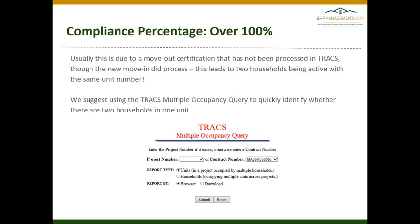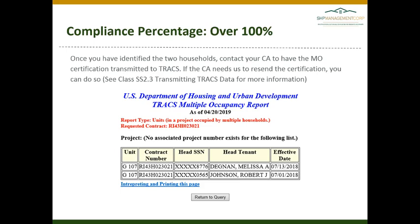Generally, this is because of a move-out certification that did not hit TRACS — you have two different households listed in the same unit. A quick way to identify that error is to use the TRACS multiple occupancy query to identify if there are two households in one unit. Select either your project number or contract number from the drop-down and click Submit. You should see an easy-to-read report. With two households listed in one unit, you'll need to identify which household needs to be moved out and contact your CA to have them transmit the certification to TRACS. The CA may indicate that they need you to resend the certification. If you need instructions on doing this, please see Class SS 2.3, Transmitting TRACS Data, for more information.